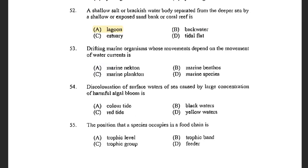Next question: Drifting marine organisms whose movement depends on the movement of water current is known as — options are Marine Nekton, Marine Benthos, Marine Plankton, and Marine Species. The answer is Marine Plankton. Plankton are organisms whose movement depends on the mercy of water current, whereas Nekton can resist the water current.